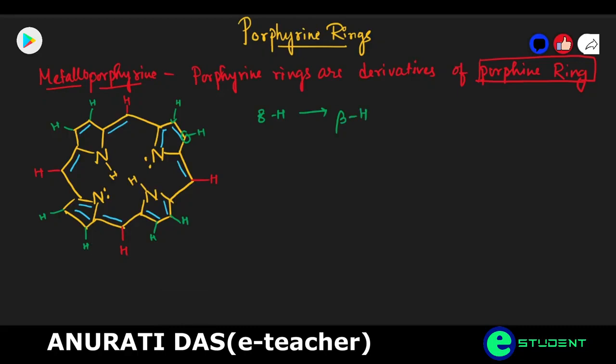What we have written in red color — positions 1, 2, 3, and 4 — these are four hydrogens. The positions marked in red are the meso positions, which are the methylated CH units. So in those positions we call them meso positions. And we have two NH hydrogens. So in total we have eight beta hydrogens, four meso hydrogens, and two NH hydrogens.